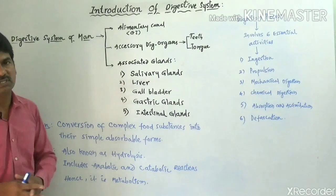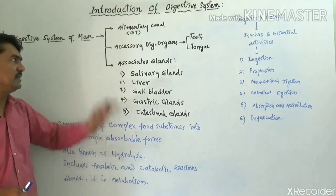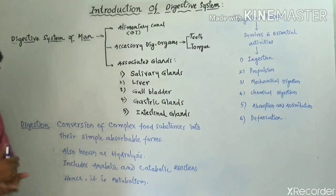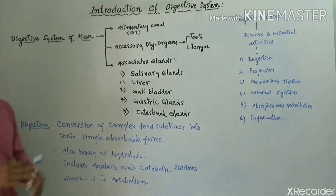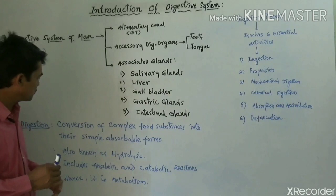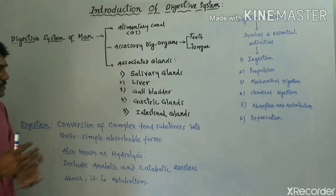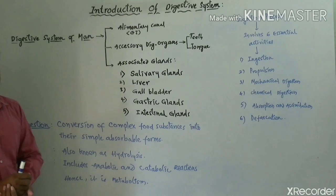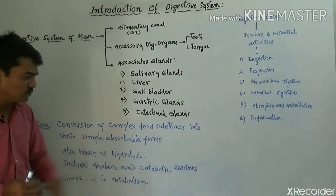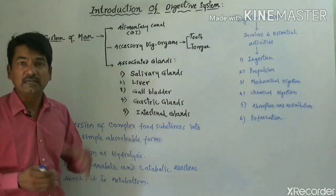So this is the total digestive system — the alimentary canal, accessory digestive organs, and associated glands. Digestion is the process of conversion of complex food substances into simple absorbable food substances. This process is also known as hydrolysis — the conversion of complex food substances into their simple absorbable forms.